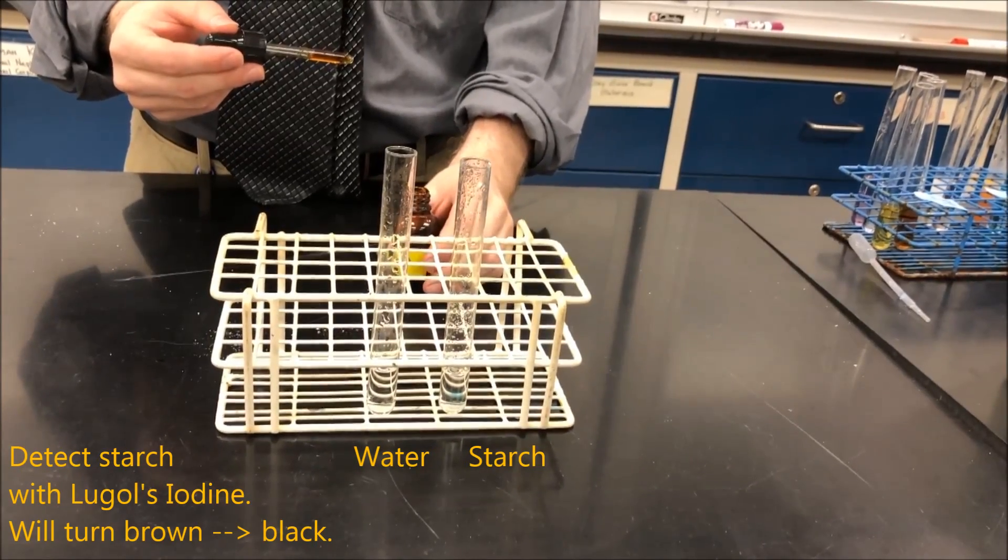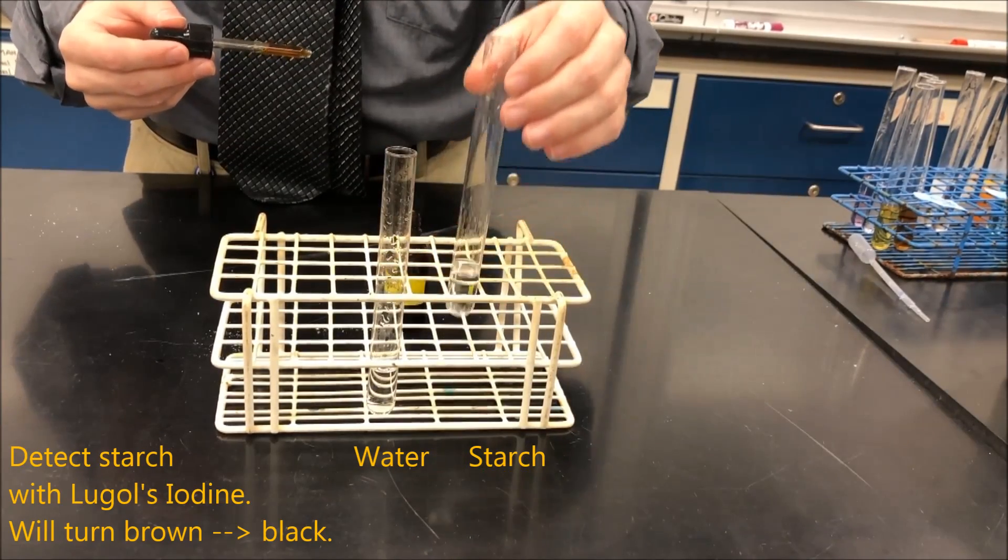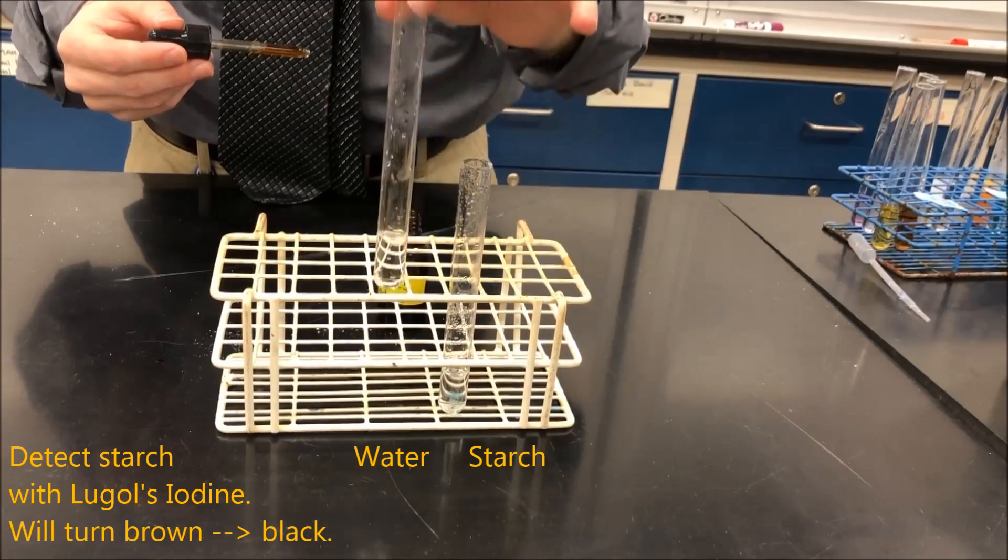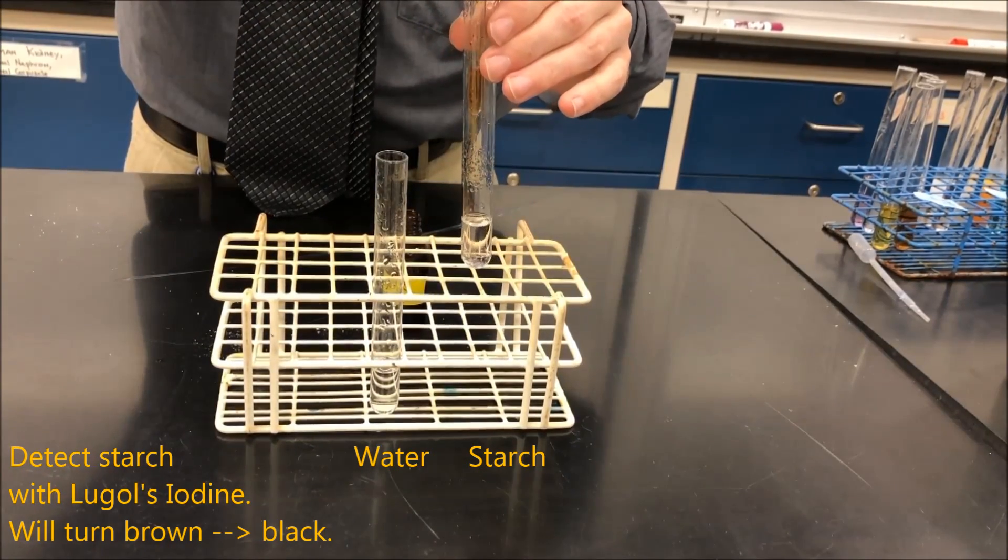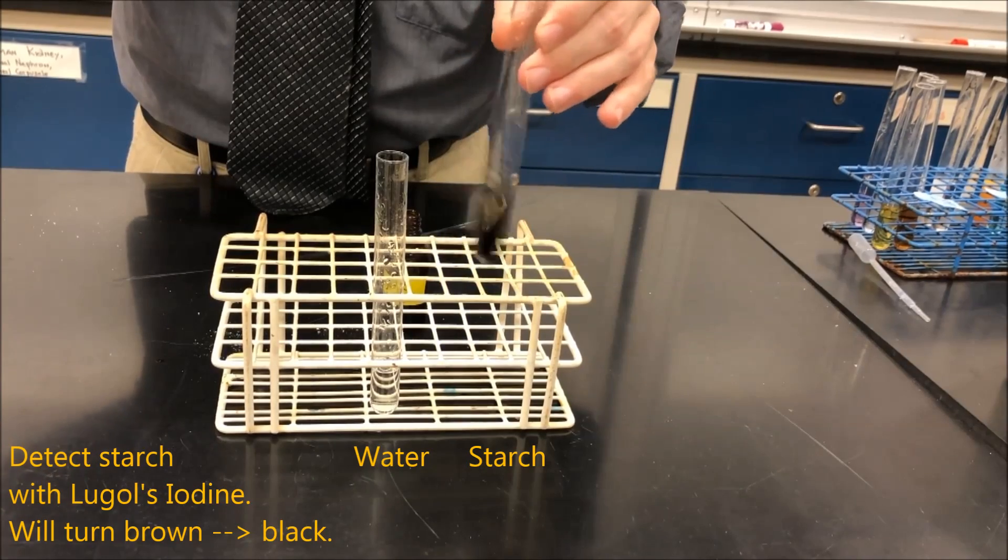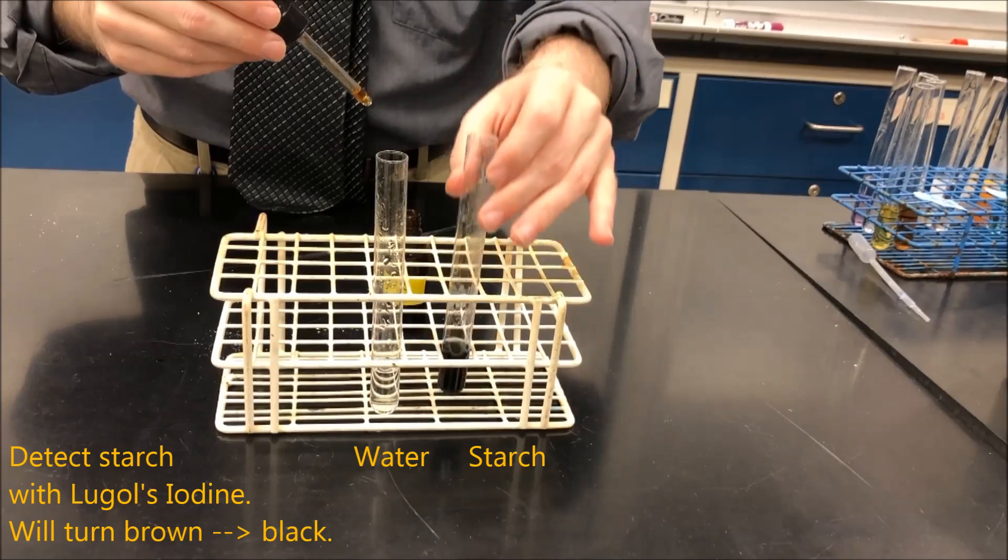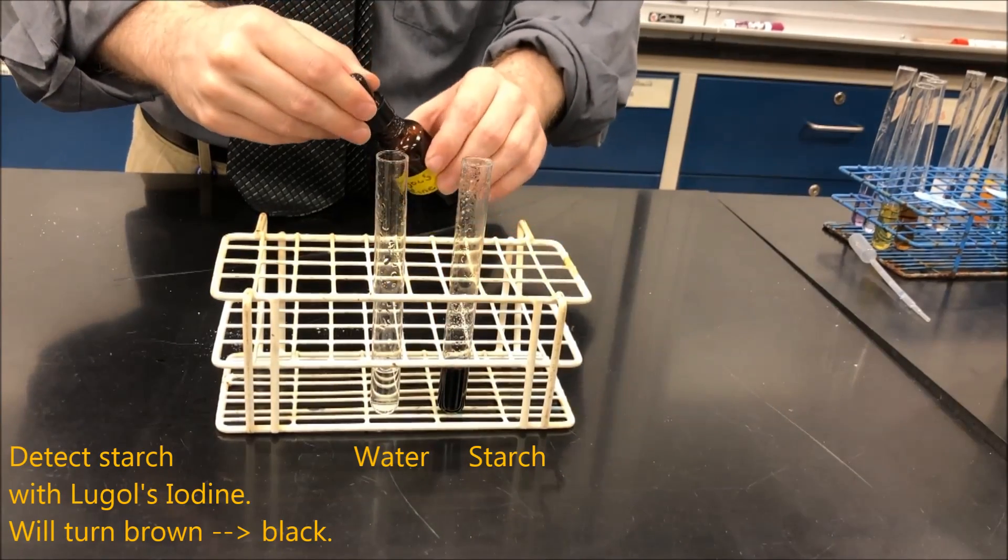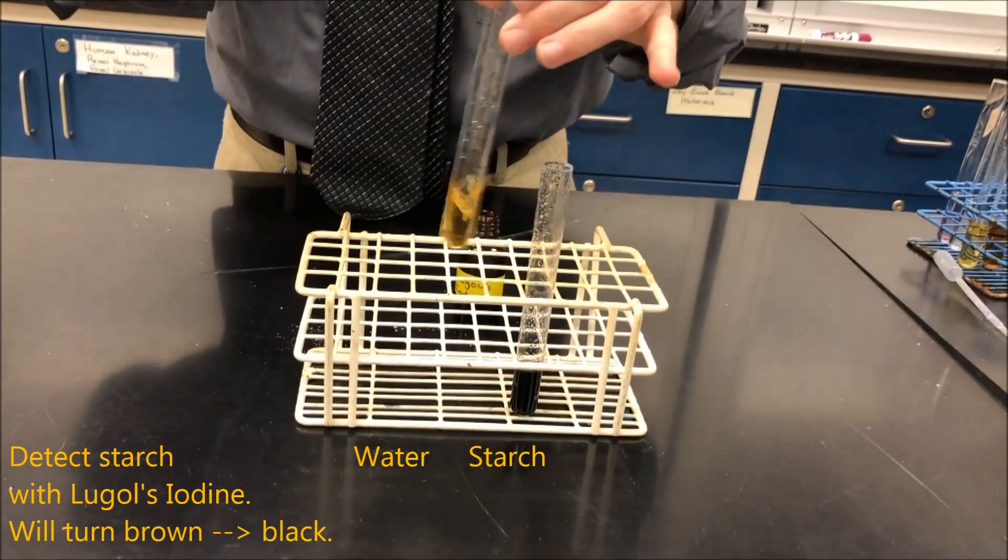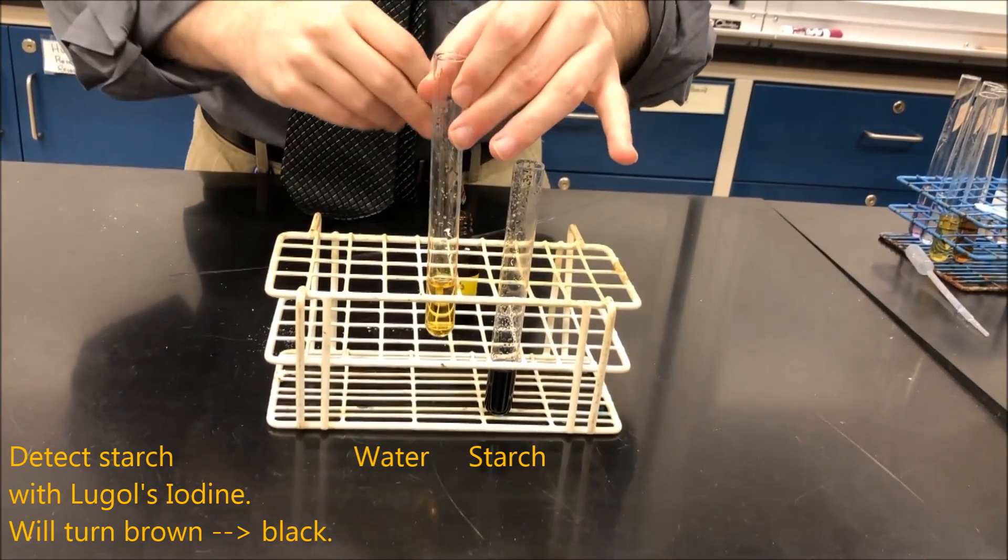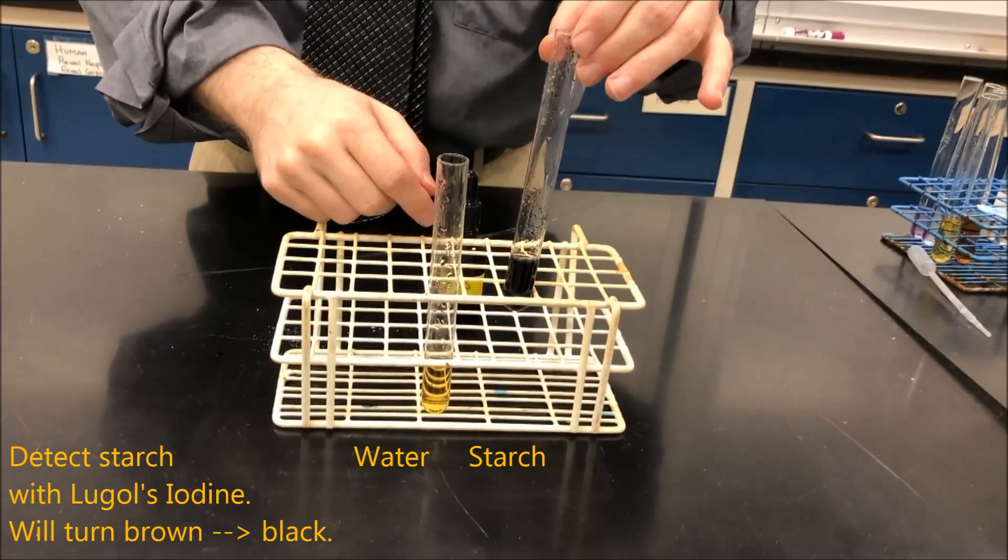To detect starch, we can use some Lugol's iodine. So here I have a test tube that contains a starch solution, and here in my control, I have some water. So I'll add a few drops of iodine. And you can see it turned from a brownish color to a black color, indicating the presence of starch. And for my control, here is some water and a few drops. And you can see that it remains brown. So when it turns black, that indicates the presence of starch.